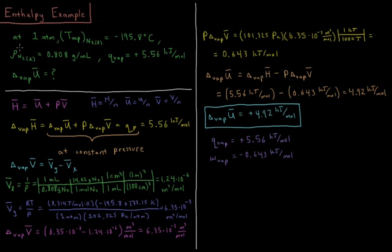So what we're going to look at is we have at one atmosphere of pressure, the vaporization temperature or the boiling temperature of liquid nitrogen is equal to minus 195.8 degrees Celsius. The density of liquid nitrogen at this temperature is equal to 0.808 grams per milliliter. And the heat absorbed by the gas during vaporization is equal to 5.56 kilojoules per mole.